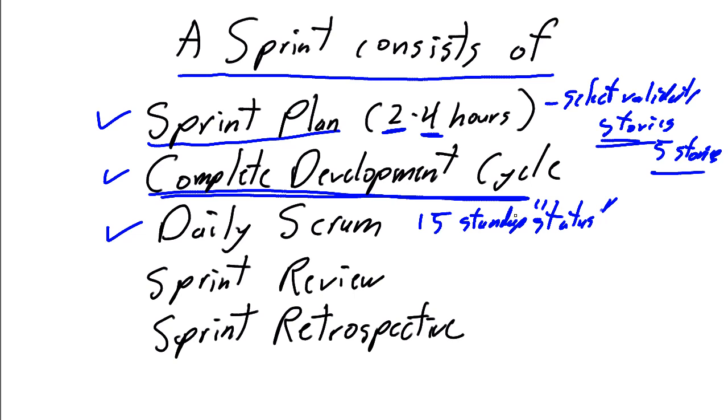What did I complete since the last daily Scrum? The last day. What am I planning to do for the next day? And what are the blockers? What are the issues? What are the impediments to success? And we move on. We do a complete development cycle.